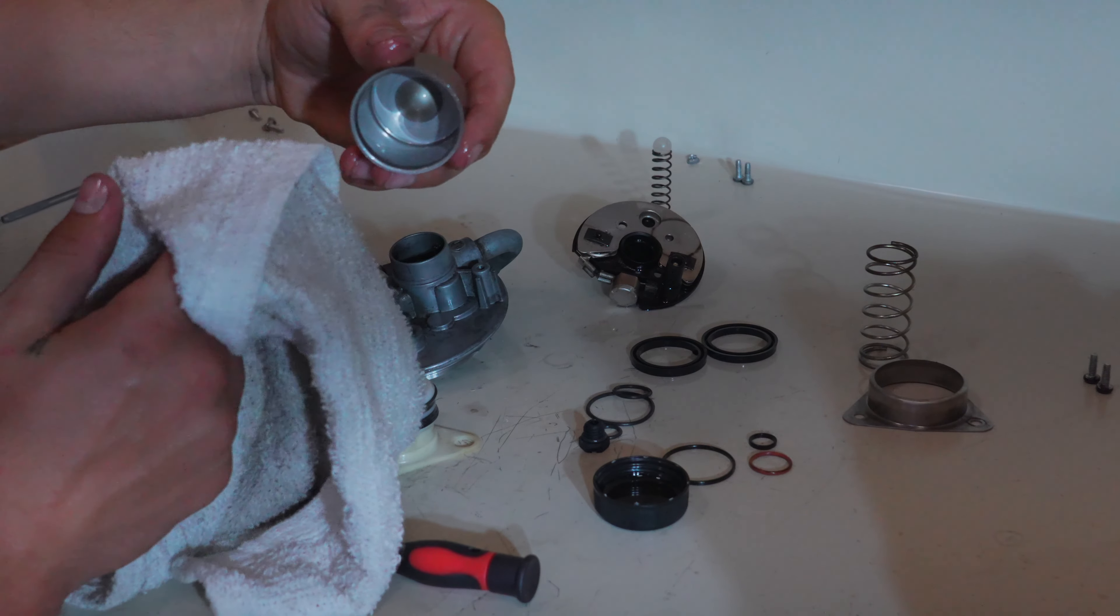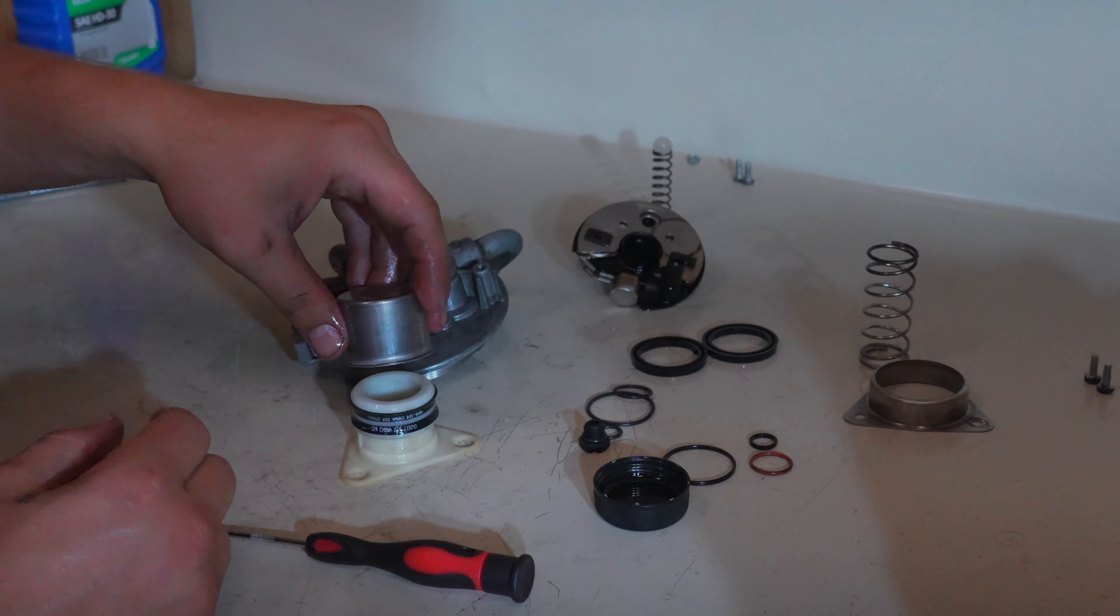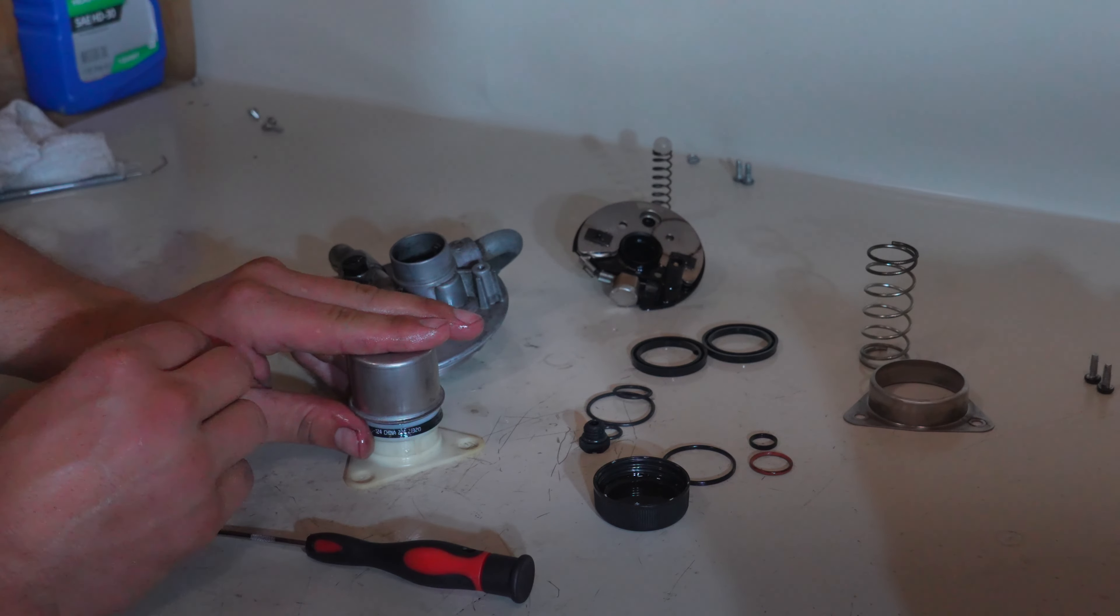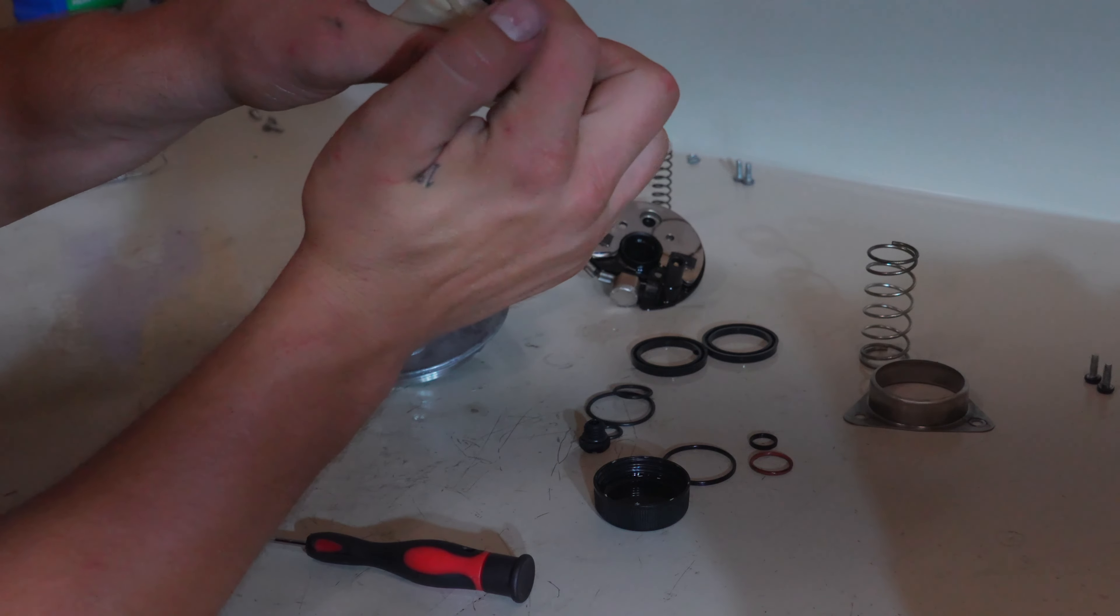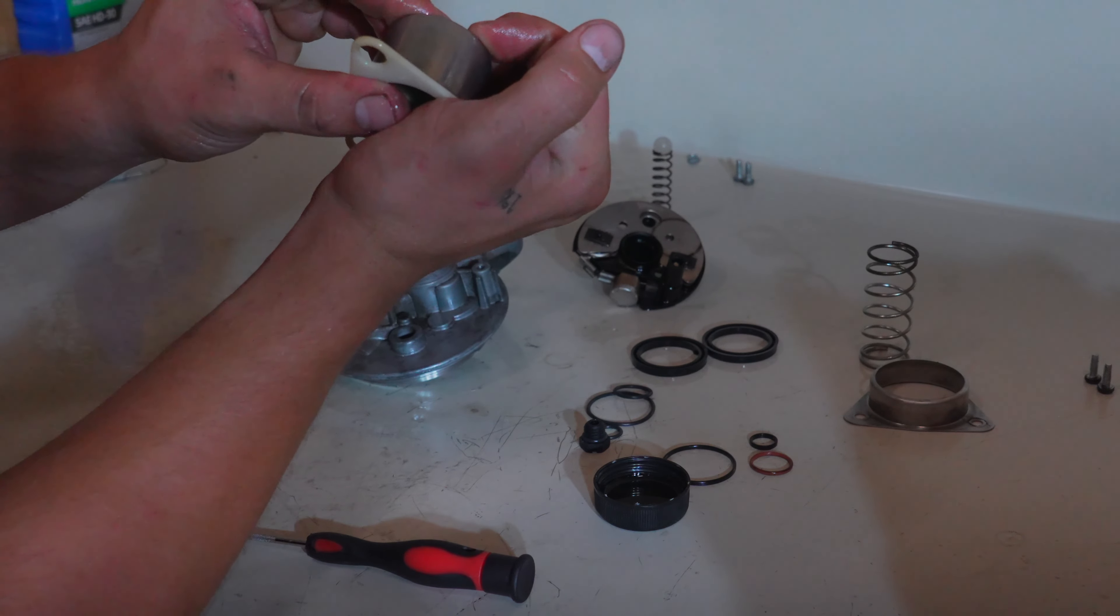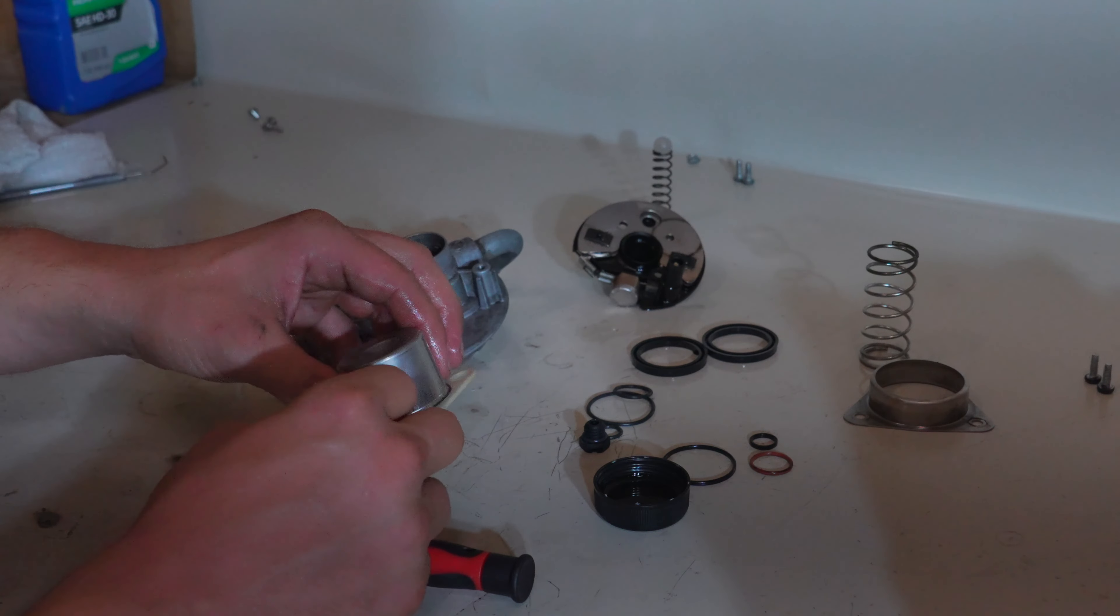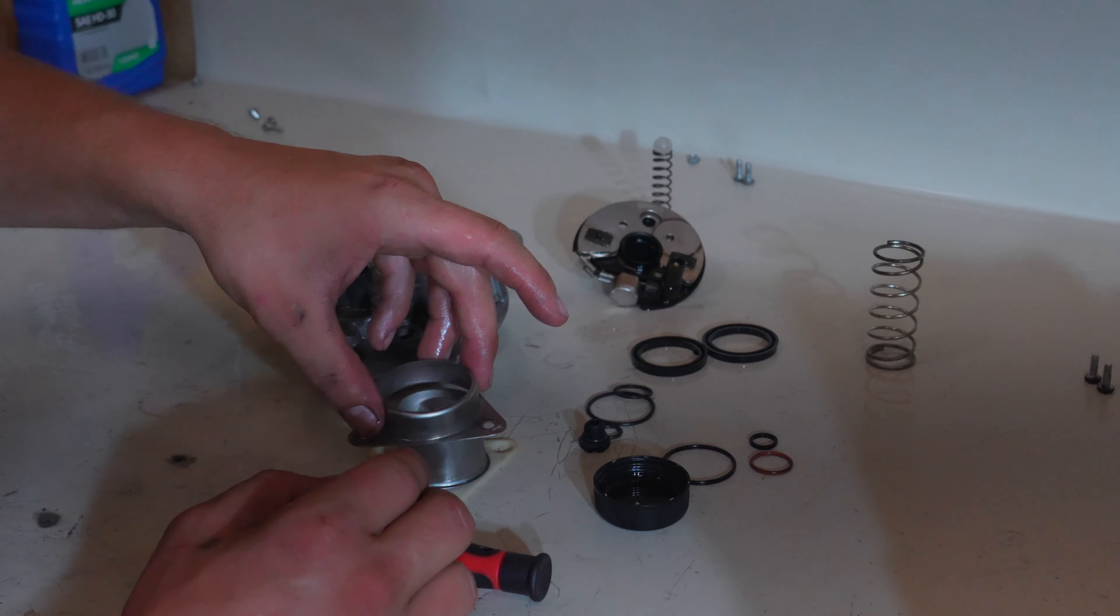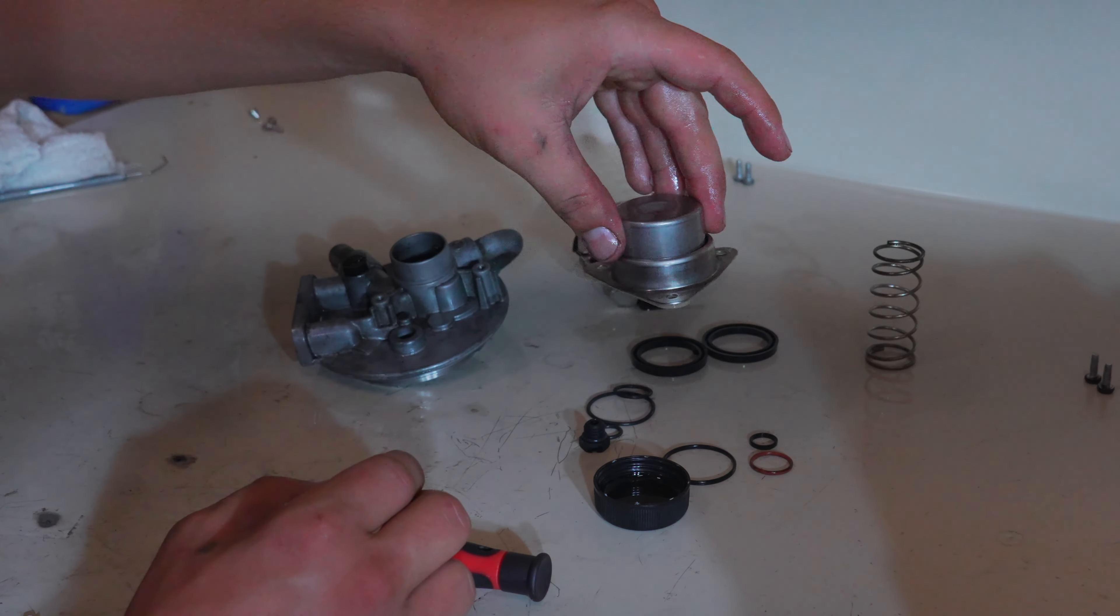Then we're going to wipe out the inside of this cup, put a little bit of lube in it, and then we're going to install it over these seals. Be careful not to make this seal up top flip over. So take your time. There we go. Now we can set this back on top and set it off to the side.